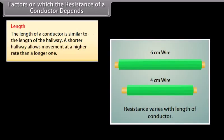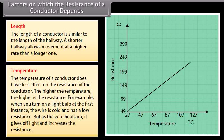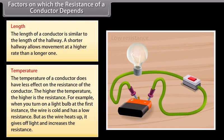Length: the length of a conductor is similar to the length of the hallway. A shorter hallway allows movement at a higher rate than a longer one. Temperature: the temperature of a conductor has an effect on the resistance of the conductor. The higher the temperature, the higher is the resistance. For example, when you turn on a light bulb, the wire is initially cold and has a low resistance, but as the wire heats up, it gives off light and the resistance increases.